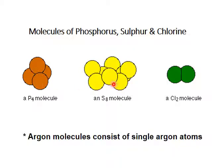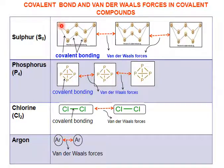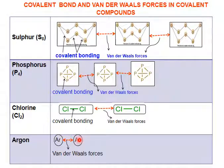The molecules are: P4 (phosphorus), S8 (sulfur), Cl2 (chlorine), and argon as a single monoatomic atom. To summarize covalent bond and van der Waals forces in covalent compounds: between atoms within a molecule is covalent bonding, and between molecules is van der Waals forces — this applies to S8, P4, Cl2, and argon.